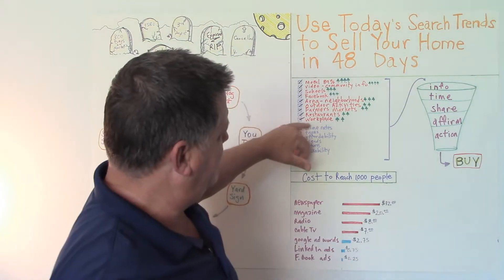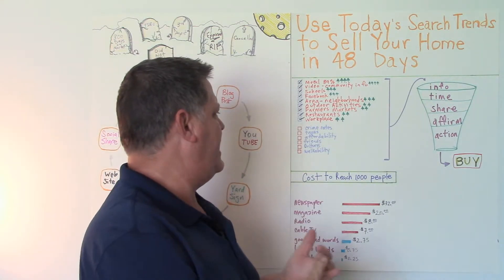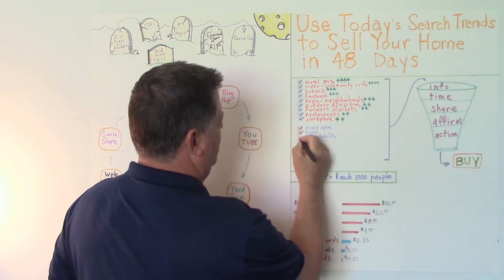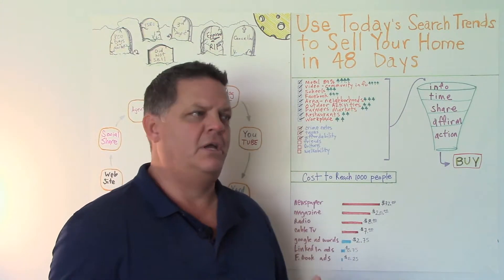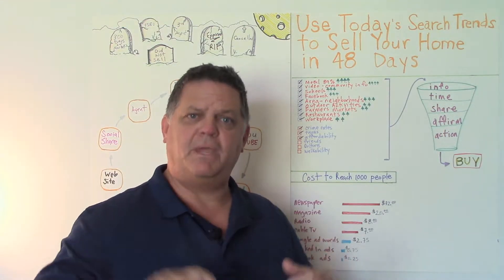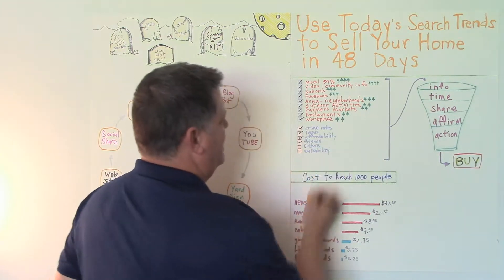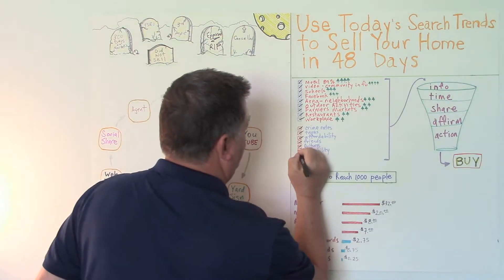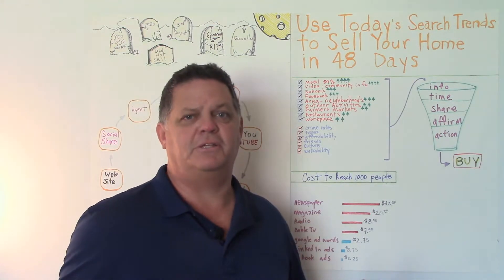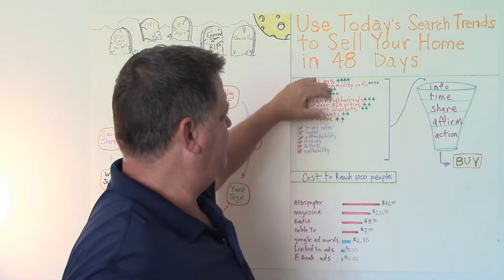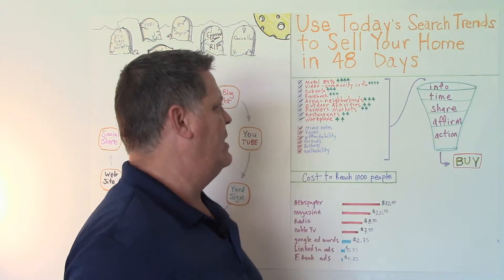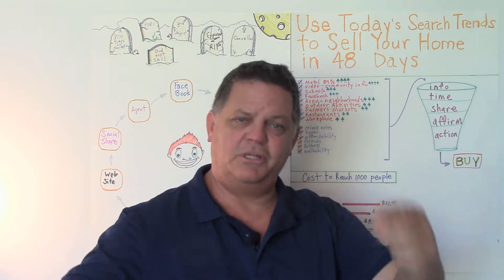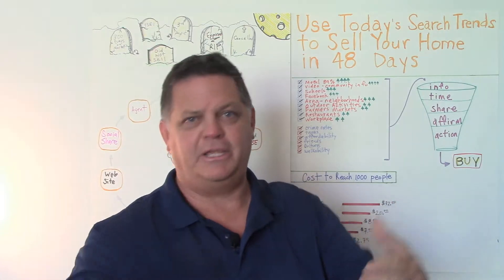Next thing they'll do is start researching the intangibles like crime rates, taxes, affordability. All this information is easily accessible online. All of our homes on our website have a little calculator that they can use to find out what monthly payment would be. They're going to want to know that they're close to friends and that the area has the kind of culture that they're excited about. And then walkability. They want to know that they're going to be able to walk to places that are of interest to them.